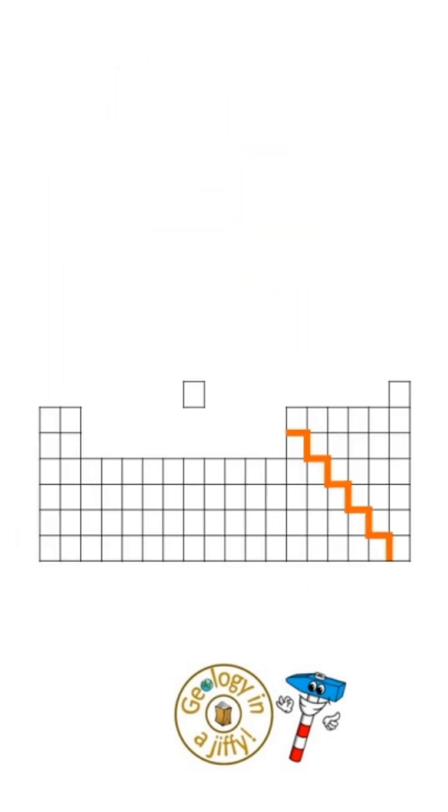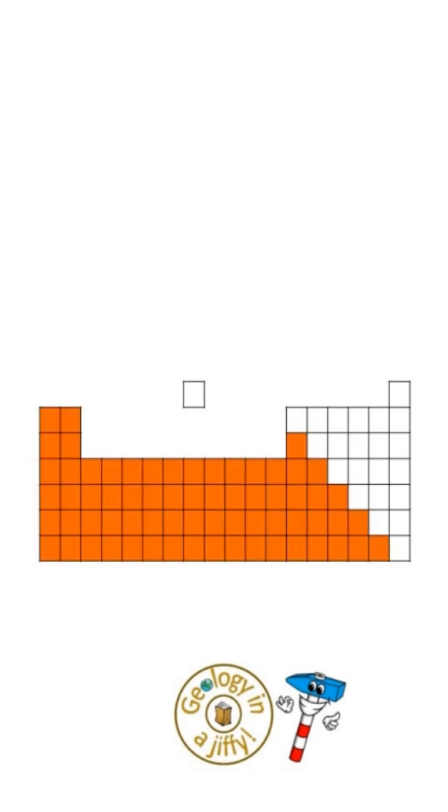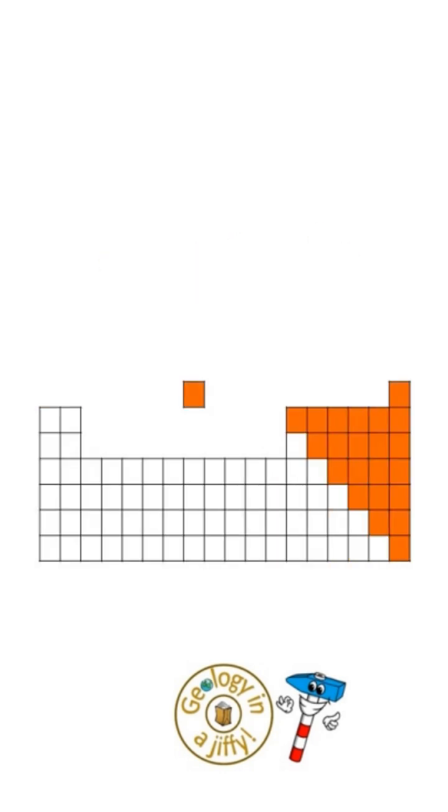In the periodic table there are two types of element separated by this zigzag line. This block being the metals and this block being the non-metals, and those along the zigzag line being the metalloids.